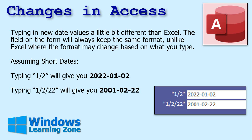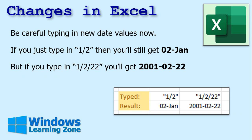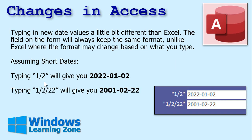The field on the form will always keep the same format, unlike Excel where the format can change based on what you type. So remember, in Excel when you type in 1/2, you still get January 2nd. In Access, if you type in 1/2, it's going to give you this format.